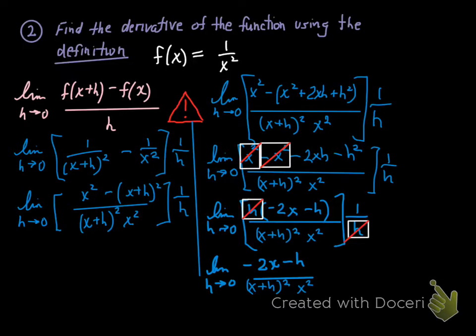You got rid of the problem child h. I know you still have one on the bottom, but it's not going to disallow you from evaluating that limit. Have you done it? Have you directly sub that zero in for h?